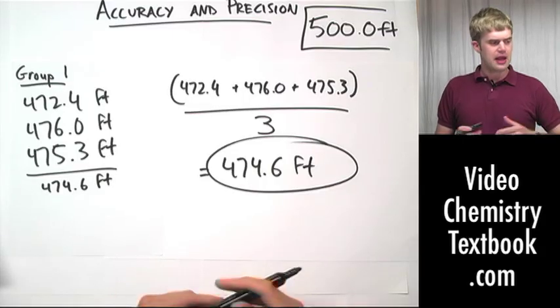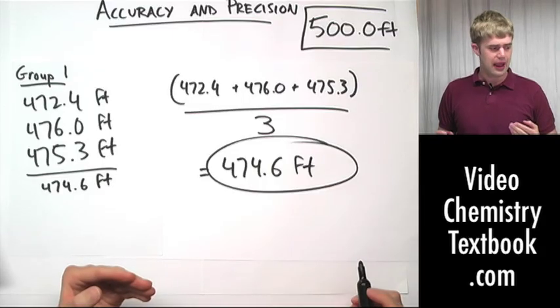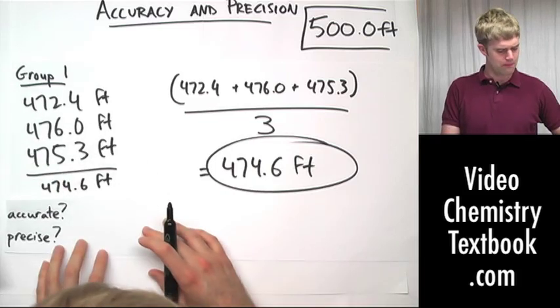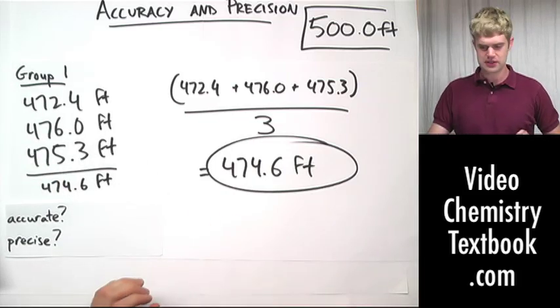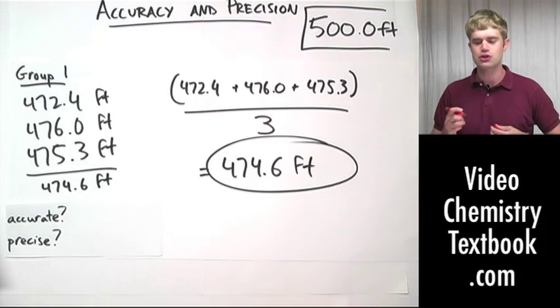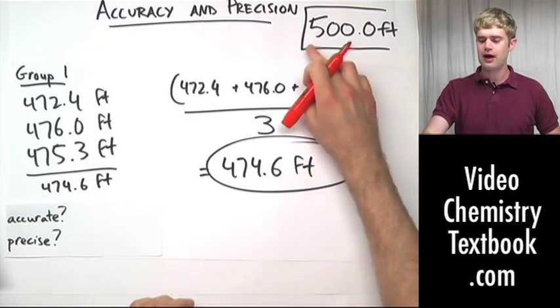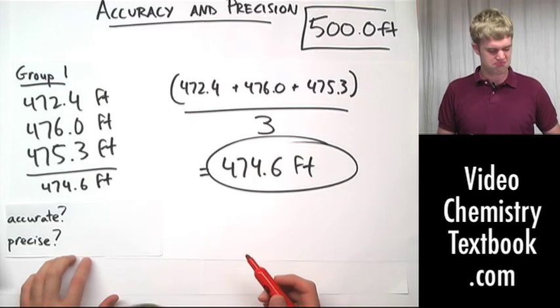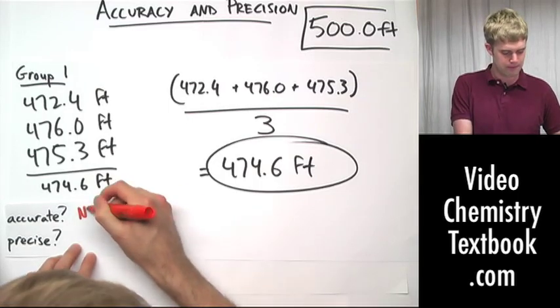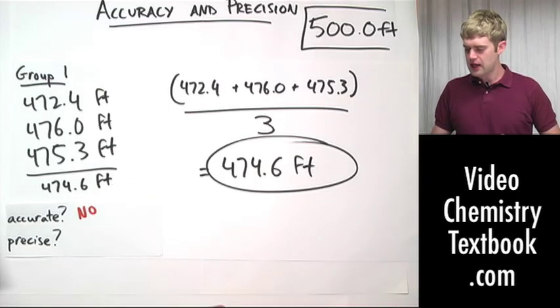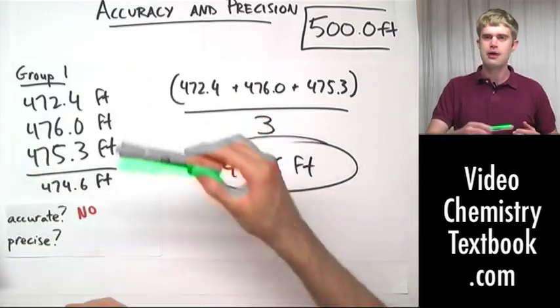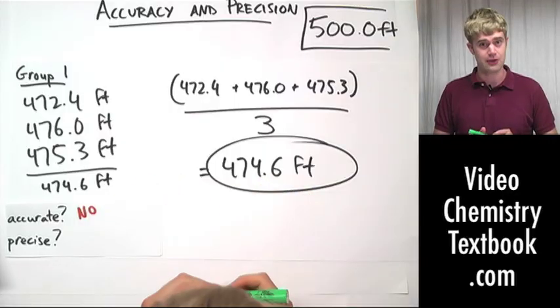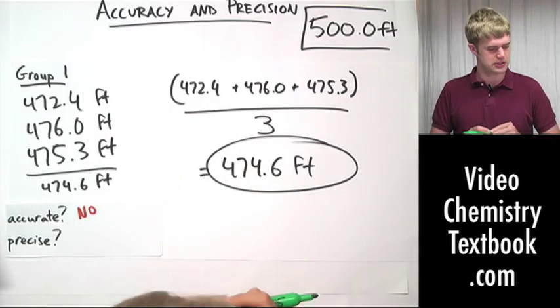Let's look at this. Is this accurate, and is this precise? If it's accurate, as we said in the previous lesson, it means that it's spot on to the actual value. The actual value is 500.0, so 474.6 is not really accurate. If it's precise, it means that the numbers, each measurement that the group took, are close together and consistent.